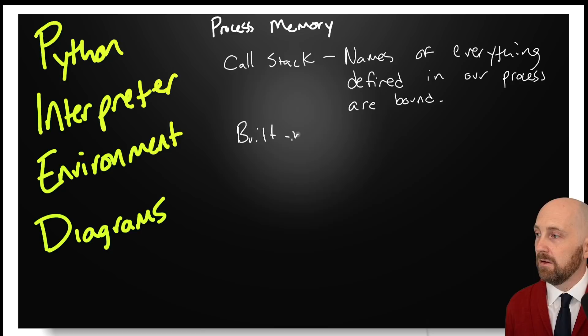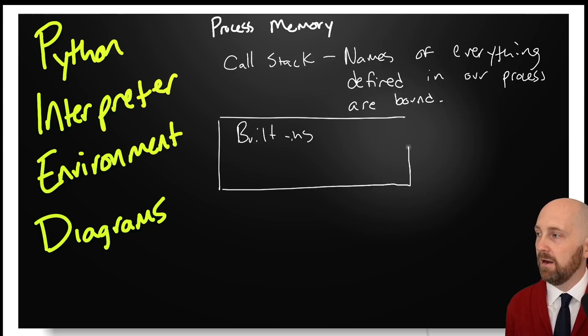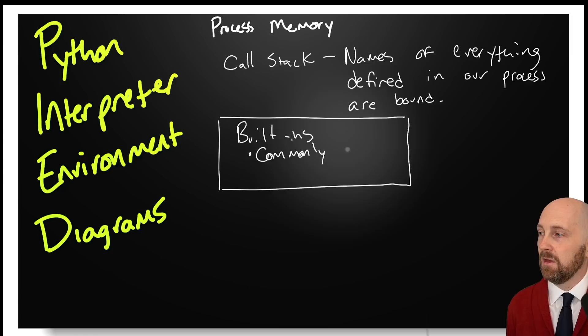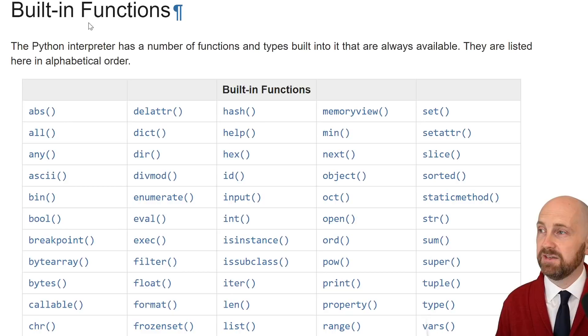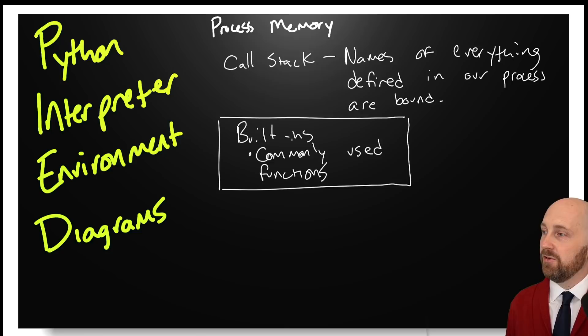It has a special area of memory that we'll think of as the call stack. We don't yet know what this call stack is. But this is where the names generally, we can think of this as where the names of everything defined in our program, you know, and I should say more specifically our process. So the names of everything defined in our process are bound. And by bound I mean they have a meaning associated with them. You can have names that don't have any meaning associated with them yet. That means they're unbound. But when a name is bound, that means it's a term that we've defined and it has meaning in our program.